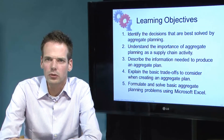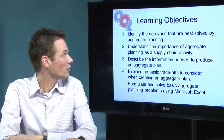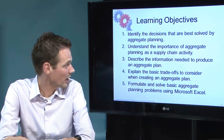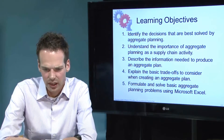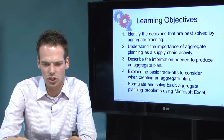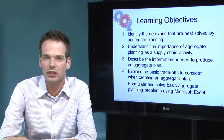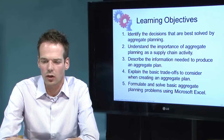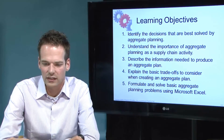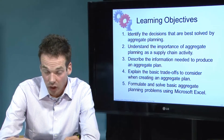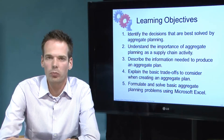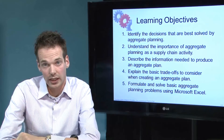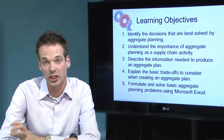The learning objectives are: first, identify the decisions that are best solved by aggregate planning; second, understand the importance of aggregate planning as a supply chain activity; third, describe the information needed to produce an aggregate plan — that's actually a short learning objective, just a list; fourth, explain the basic trade-offs to consider when creating an aggregate plan. The fourth learning objective is a bit more complicated — it tells you about linear programming as a methodology to use in aggregate planning.